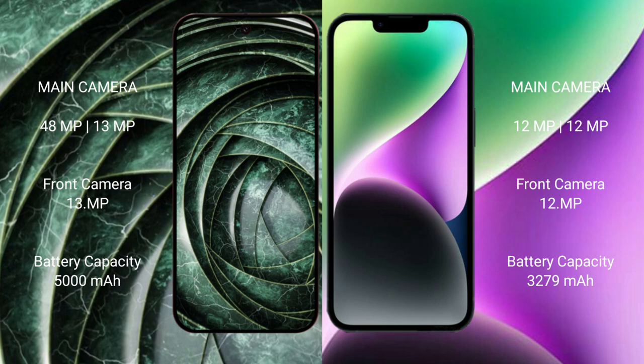Google Pixel 9a has a 5000 mAh battery with 18-watt fast charging support. iPhone 14 has a 3279 mAh battery with 30-watt fast charging support.